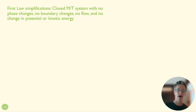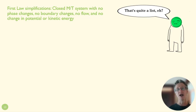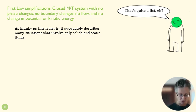One final simplification is this really long list of assumptions here. Closed MT system, no phase change, no boundary change, no flow, no change in potential or kinetic energy. That seems a little ridiculous to have that many assumptions, but it actually describes a lot of systems that just have, if we're talking just about a solid or a static fluid and it reduces that equation quite considerably to this guy down here where the E dot of our system,